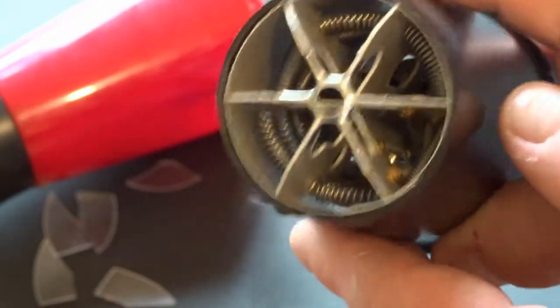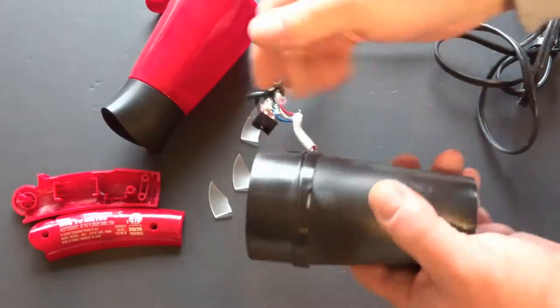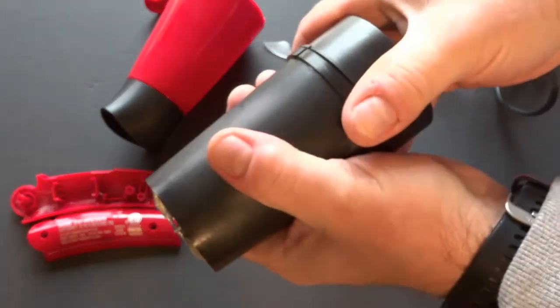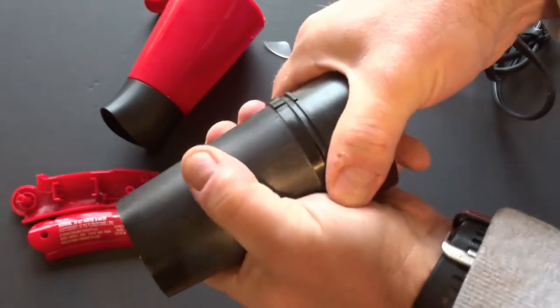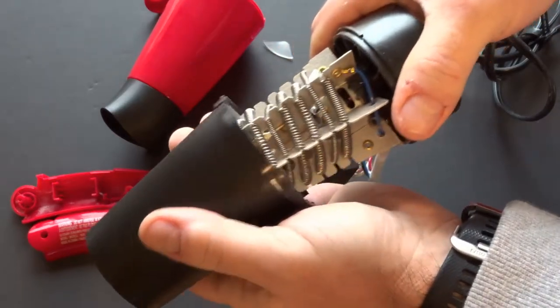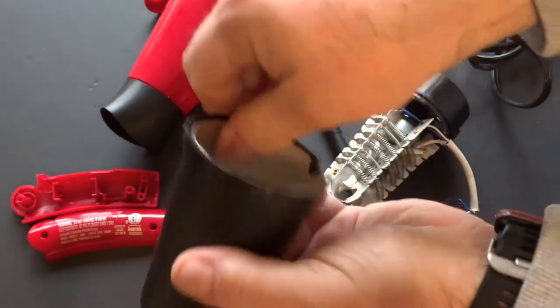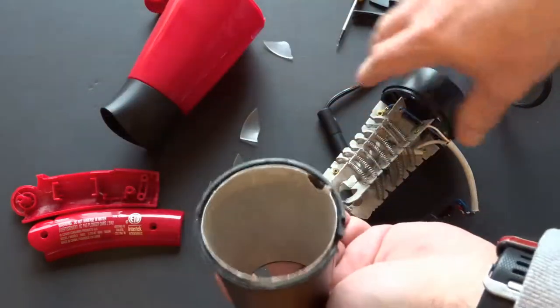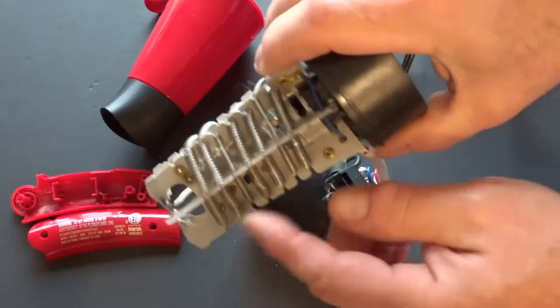So there's the heating coils in there. And for even a closer look, you can take this off. This is like the heat shield so your plastic doesn't melt.